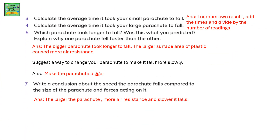Calculate the average time it took for the small parachute to fall, and then calculate the average time it took for the large parachute to fall. Which parachute took longer to fall, and was this what you predicted? Explain why one parachute fell faster than the other. The bigger parachute took longer to fall because the larger surface area of plastic caused more air resistance. Suggest a way to change a parachute to make it fall more slowly — you can just make a bigger parachute.